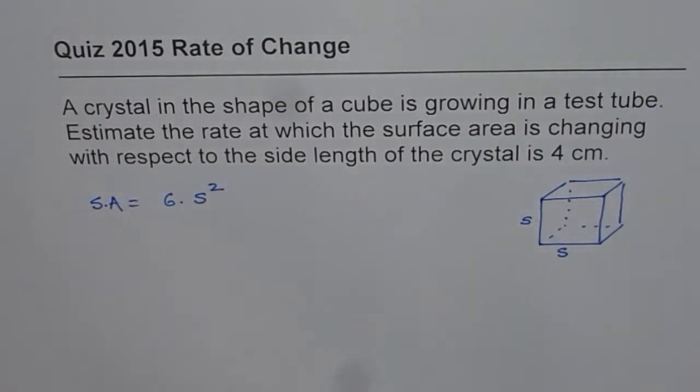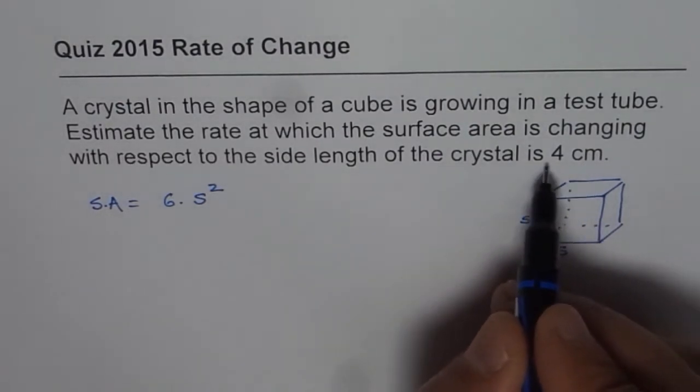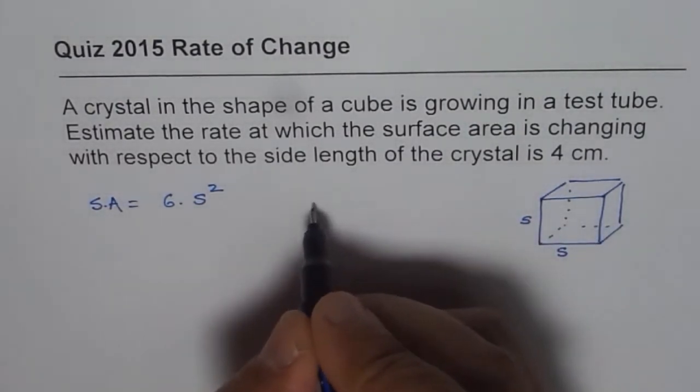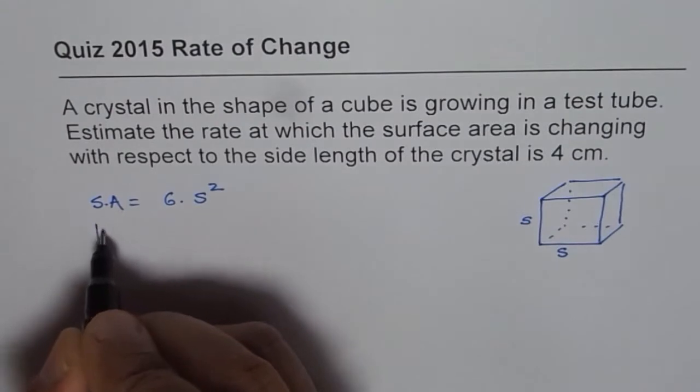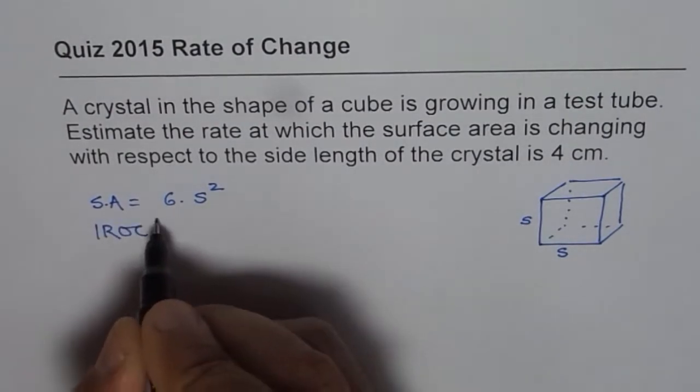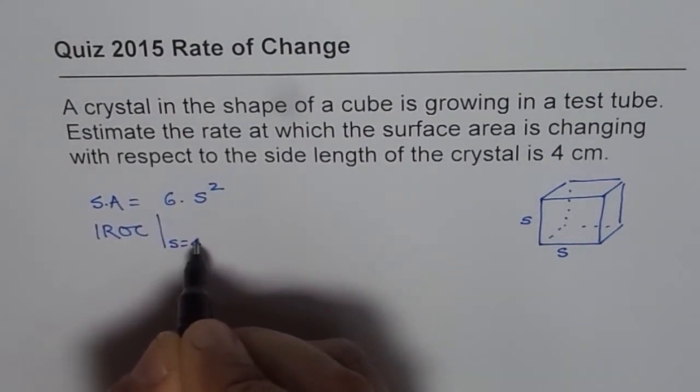Now when we are trying to find the rate of change, we are trying to say instantaneous rate of change when side length is 4. So we are trying to find instantaneous rate of change when side is equal to 4 units.